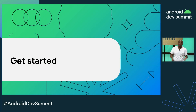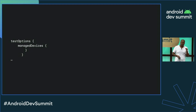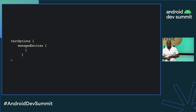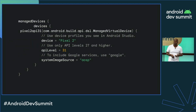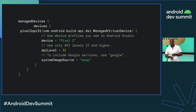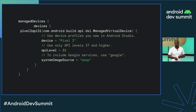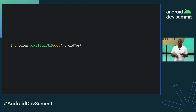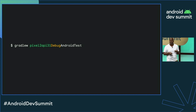How do you get started? It only takes a couple of lines in your build.gradle file, starting with the managed devices closure. In this closure, we define a device — here we're defining the Pixel 2 device running API level 31 and using the AOSP image. We could use Google if we wanted the Play Store, but we'll stick with AOSP. And just as easily, we can run our tests on that device using the Android test task, modified with the build variant and the name of the device.